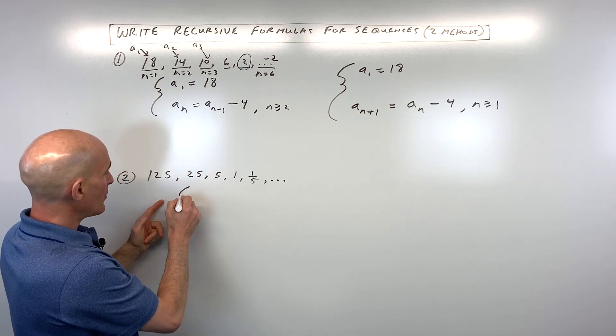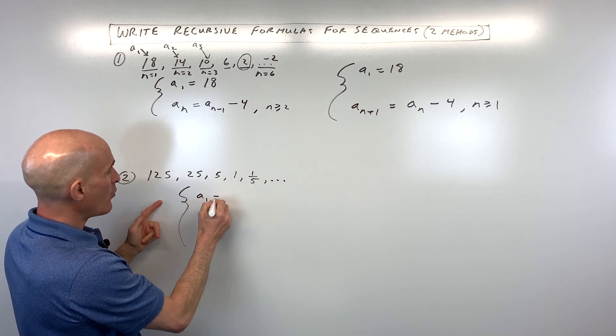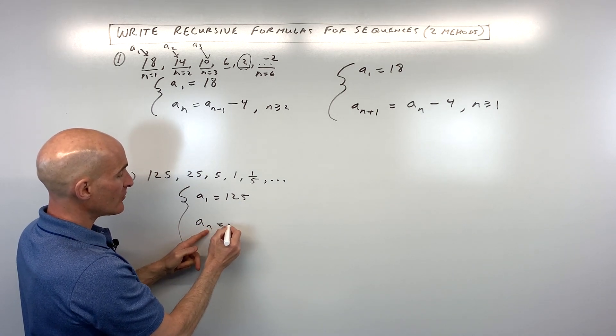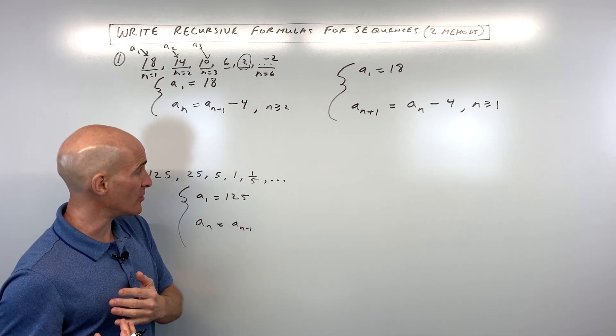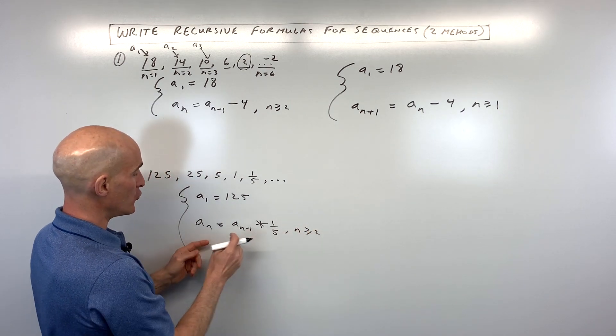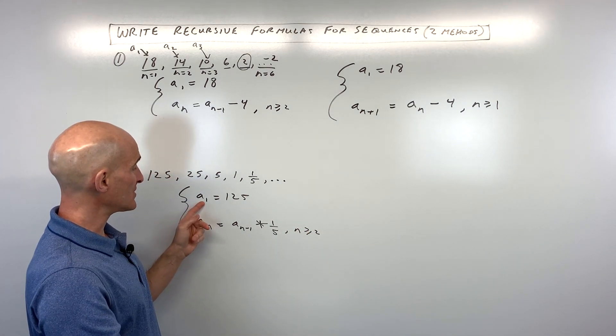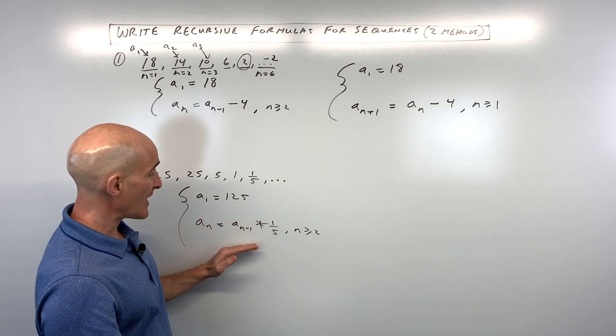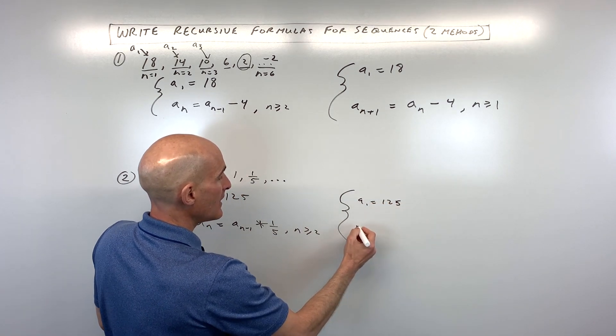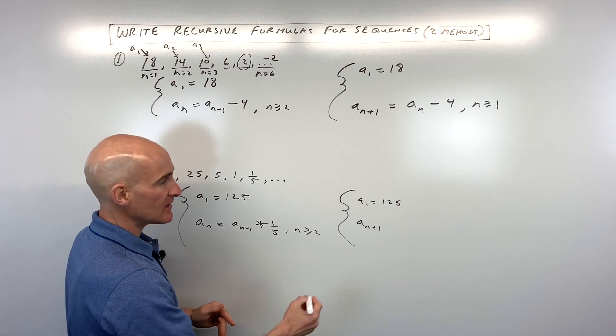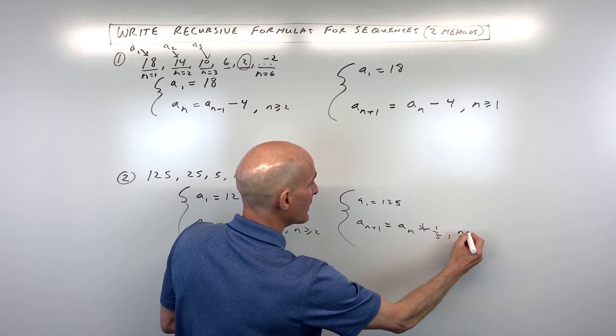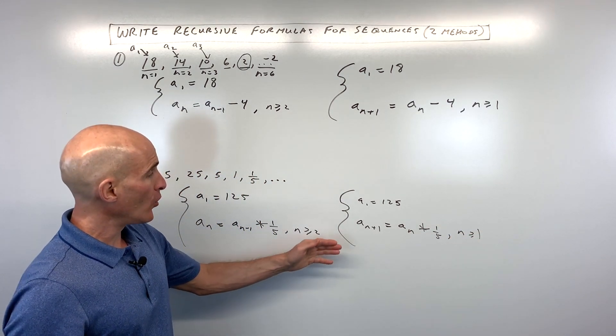So what we're going to do is we're going to start just like we did with this one. We're going to say a sub 1 equals the first term, the value of the first term, 125. But to get to the value of the nth term, we're going to take the n minus 1th term. Remember, that's the previous term. And we're going to multiply by 1 fifth, and that's when n is greater than or equal to 2, meaning when you're on the second term, third term, fourth term. Of course, a sub 1, we already know the value of the first term. So that's one option.